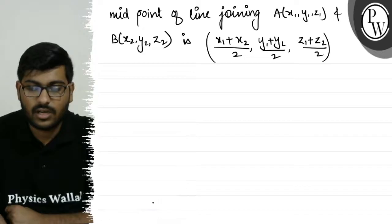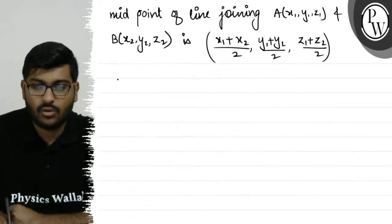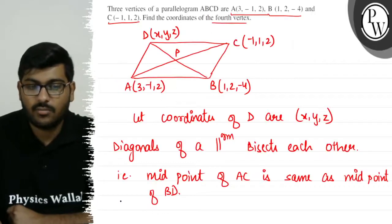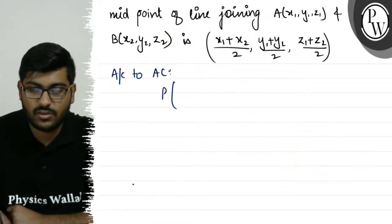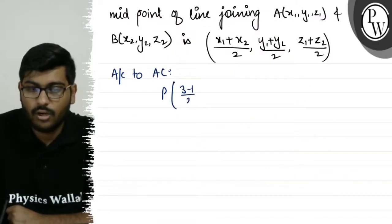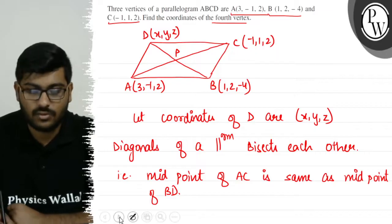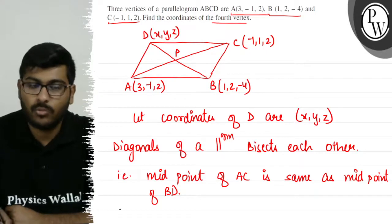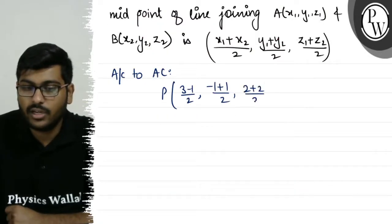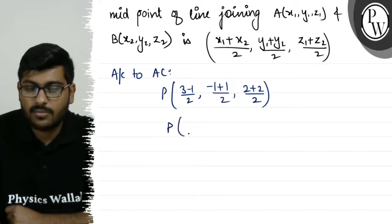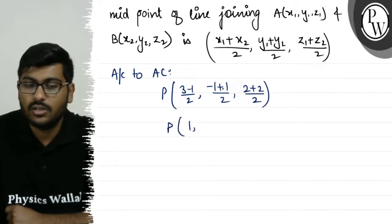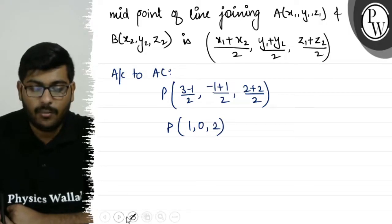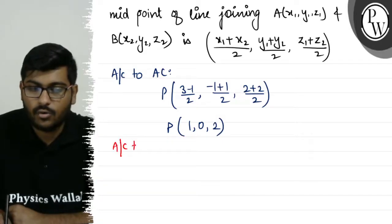Let's find the midpoint according to diagonal AC. The midpoint of AC is: (3 + (-1))/2, (-1 + 1)/2, (2 + 2)/2, which gives us (1, 0, 2). So the midpoint P of diagonal AC equals (1, 0, 2).